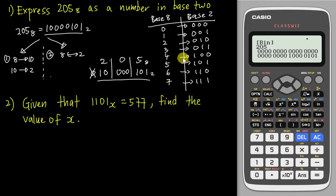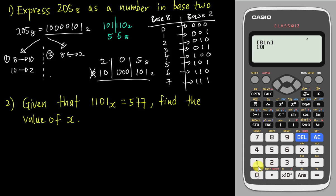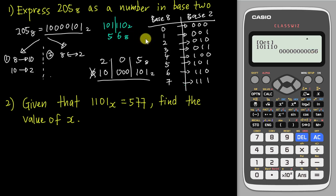The same idea works the other way: if I have 101110 base 2 and want to convert to base 8, I group digits into threes from right: 101 and 110. From the table: 101=5, 110=6. So the answer is 56 base 8. Checking with the calculator: enter 101110 in BIN, press Enter, then select OCT — it shows 56. Correct!